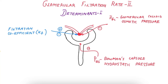This is the second video on glomerular filtration rate, covering the determinants: glomerular filtration coefficient, Bowman's capsule hydrostatic pressure, and glomerular colloid osmotic pressure. Please remember that none of these are the primary determinants of GFR — that is, they are not the primary variables which affect the glomerular filtration rate.